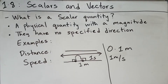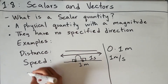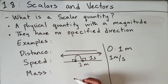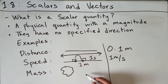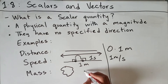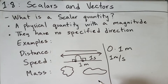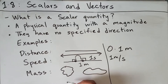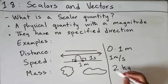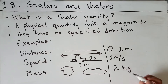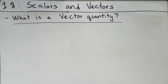Another example of a scalar quantity is mass, which is a measure of the quantity or amount of matter in some object. For example, this rock has a mass of 2 kilograms.